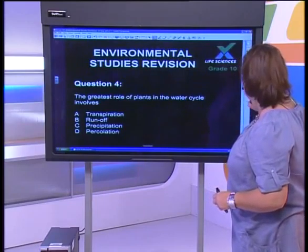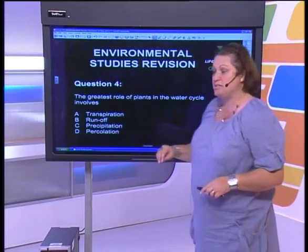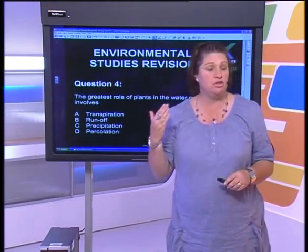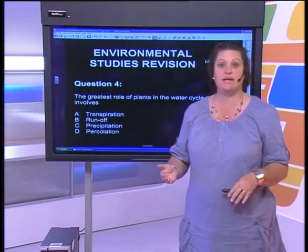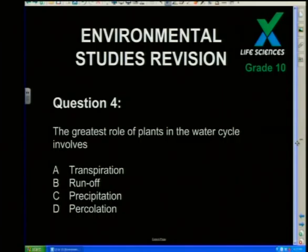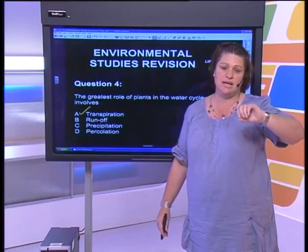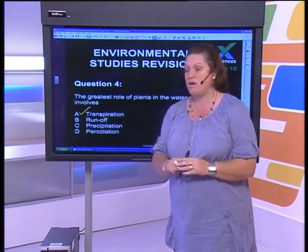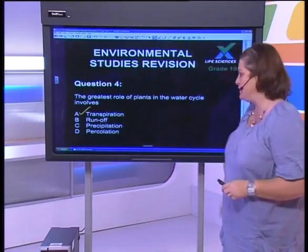When we look at abiotic factors, you should have studied the water cycle, the carbon cycle, and the nitrogen cycle. A simple question: what is the greatest role of plants in the water cycle? Because we've done plant tissues and how plants lose water, the answer is transpiration.